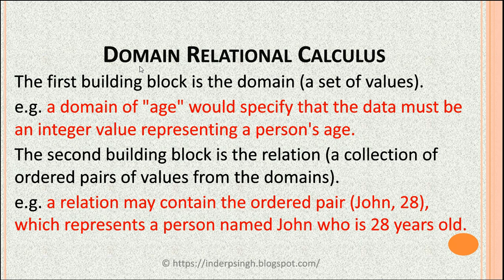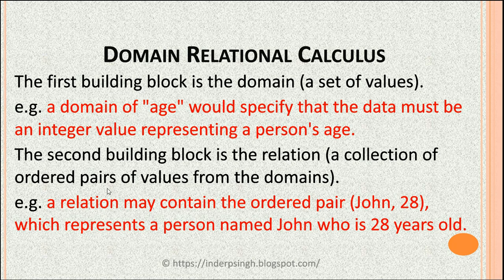The second main type of relational calculus is domain relational calculus. It has two building blocks. The first is the domain — a set of values. For example, the domain of age specifies that the data must be an integer representing a person's age. The second building block is the relation, which is a collection of ordered pairs of values — for example, the ordered pair (John, 28), meaning John is a person whose age is 28.